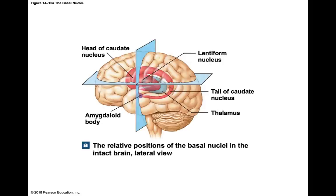The basal nuclei directs commands and processes sensory information at an unconscious level — you're not consciously aware of it. The basal nuclei are masses of gray matter in each hemisphere embedded in the cerebral white matter. We used to call it the basal ganglia, but ganglia are only found in the peripheral nervous system, so we now only say basal nuclei.